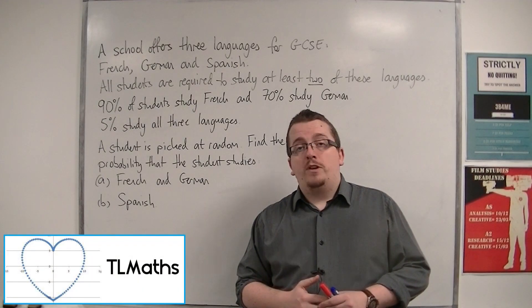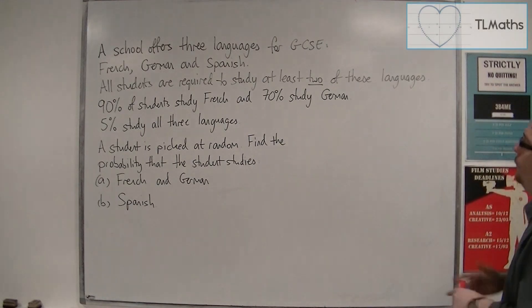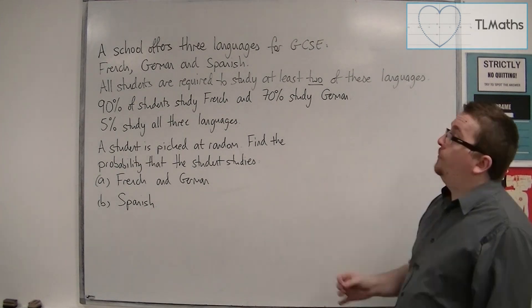In this video we're going to look at a slightly trickier Venn Diagram problem. A school offers three languages for GCSE: French, German and Spanish.